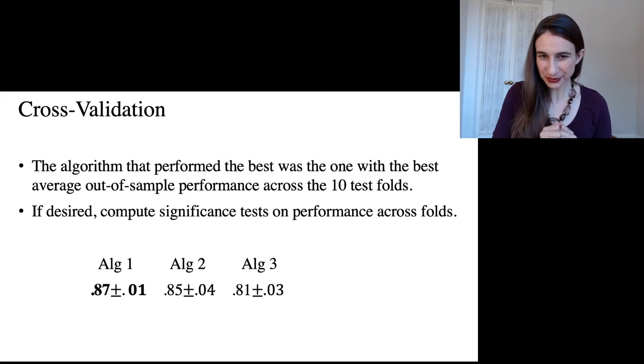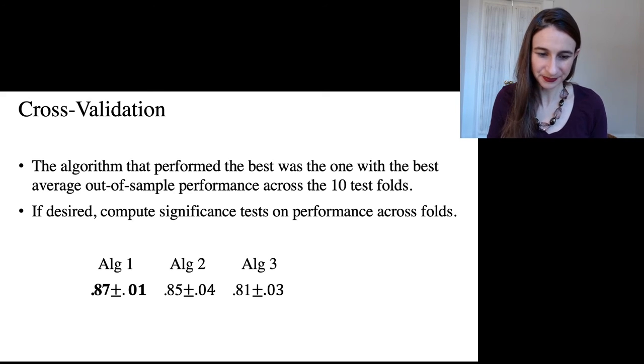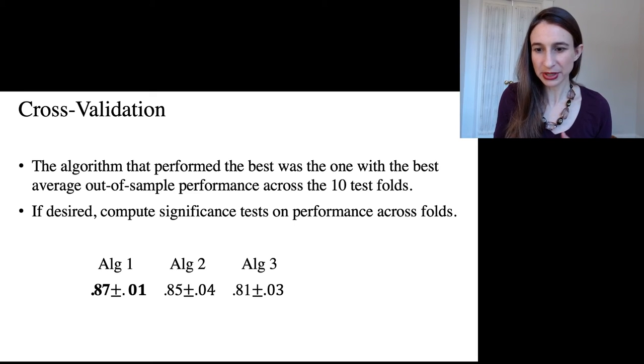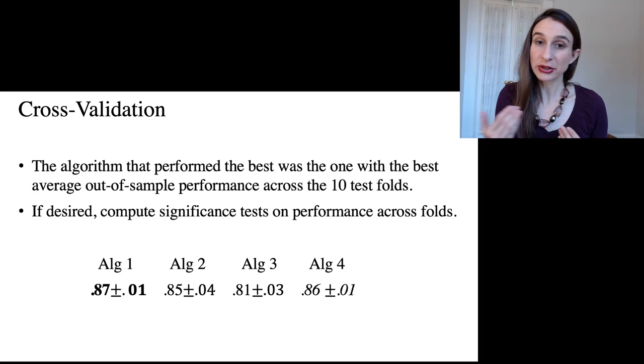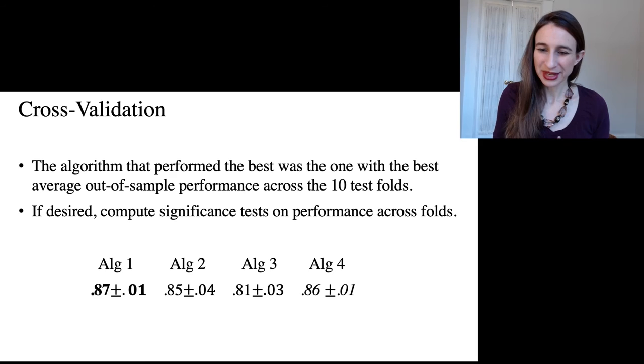So algorithm one versus algorithm two, algorithm one versus algorithm three, do the t-test on both of those. And then sometimes you end up in the situation where algorithm one performed, say it performed better than another algorithm, but it wasn't statistically significantly better. And so in that case,